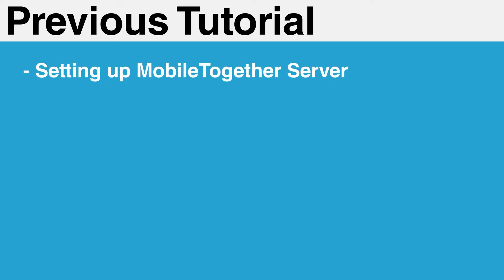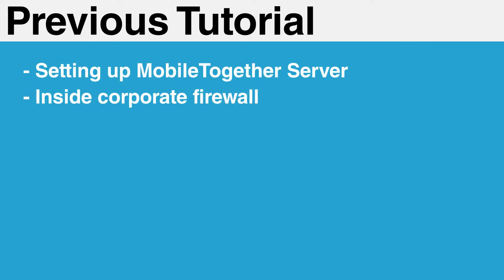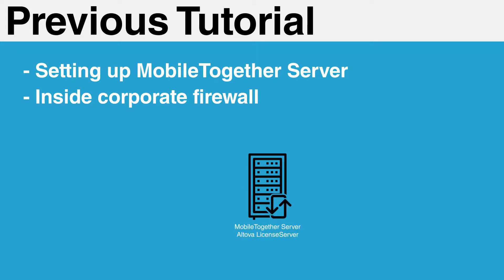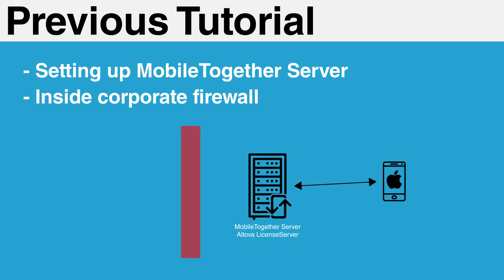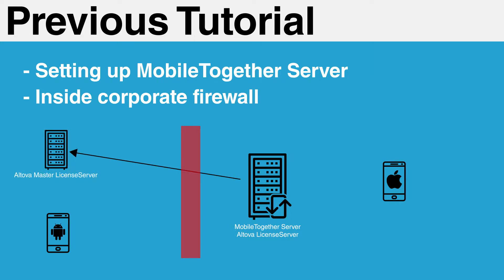In the previous tutorial, we went over the steps to set up a MobileTogether server installation residing inside your corporate firewall. In that example, we set up both the MobileTogether server and Altova license server on the same machine. All connections were limited to clients on the same network as the MobileTogether server, so mobile devices on a cellular connection were unable to load apps. The only connection made to the outside world was a one-way request by license server to verify the uploaded license. Our goal now is to make apps usable outside your corporate network.